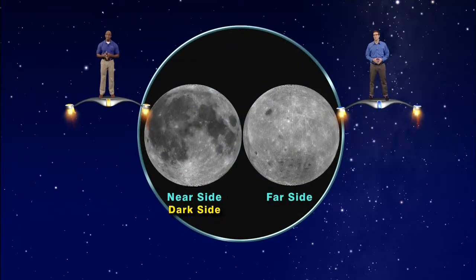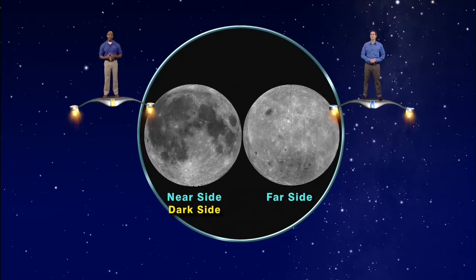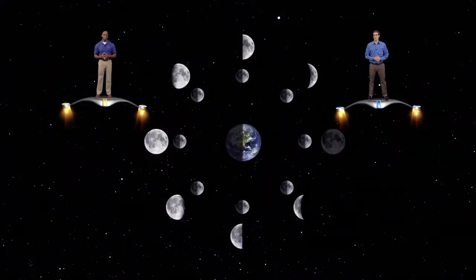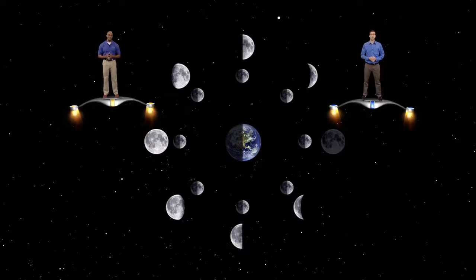The dark side of the moon is sometimes confused for the far side of the moon, which is the side that always faces away from the earth. The changing patterns of daylight and darkness that we see on the moon are called phases.